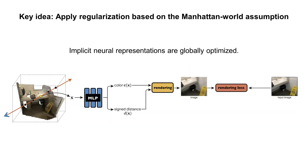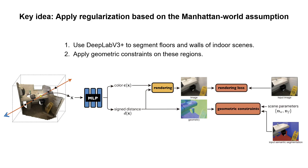In contrast to traditional multiview stereo methods, implicit neural representations are optimized in 3D space, which makes them naturally consistent across different camera views. So it would be better if we can apply the regularization on implicit neural representations. This figure presents a pipeline that applies the regularization to implicit neural representations. We use an off-the-shelf 2D semantic segmentation network to segment floors and walls of indoor scenes, and then apply geometric constraints to these regions.